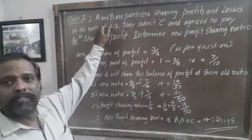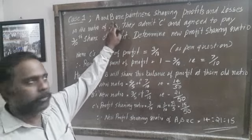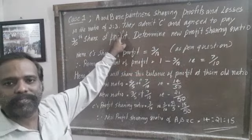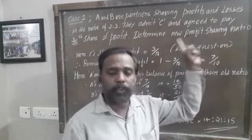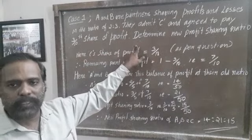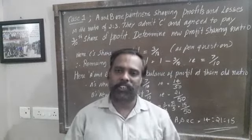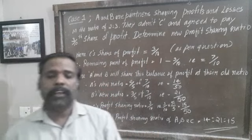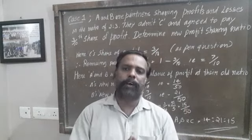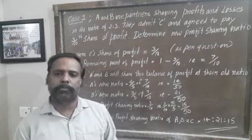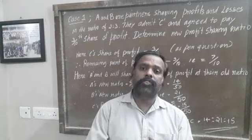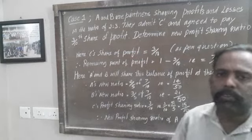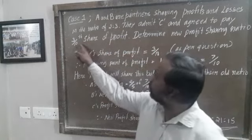Case one. A and B are partners sharing profits and losses in the ratio of 2:3. They admit C and agree to pay C a 3/10th share of profit. Determine the new profit sharing ratio.